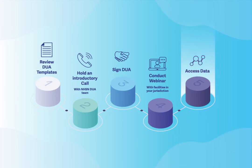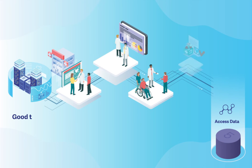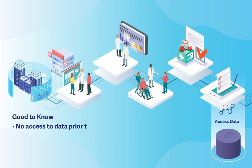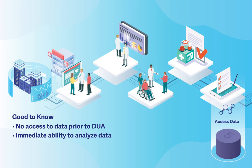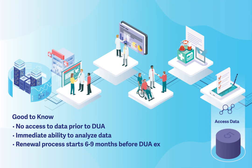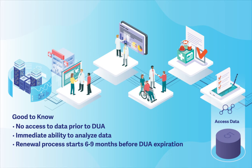Once all of these steps are complete, you will have access to the data sets for healthcare facilities within your jurisdiction. You will not have access to data reported to NHSN prior to your data access date. Once you begin receiving data sets, you can immediately begin to analyze the data to inform healthcare policy and actions. You should receive a notification to begin the renewal process about six to nine months before your DUA expiration date. Do not delay this process since there may have been changes in the content of the DUA template and the available data that require additional review.